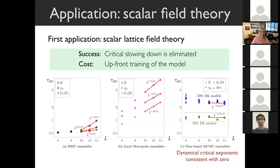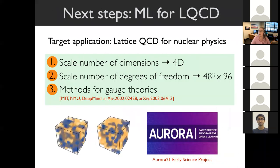The upfront training cost is amortized over the number of samples taken. This was a nice example showing we can train generative models for field theories. But to reach our target applications of lattice QCD for nuclear physics, we need not just to scale these up significantly but also to develop methods for gauge field theories—not just real numbers but matrices living on the links of the lattice. We're working with the Aurora exascale supercomputer early science project to develop ways of scaling our algorithms for deployment on exascale hardware.